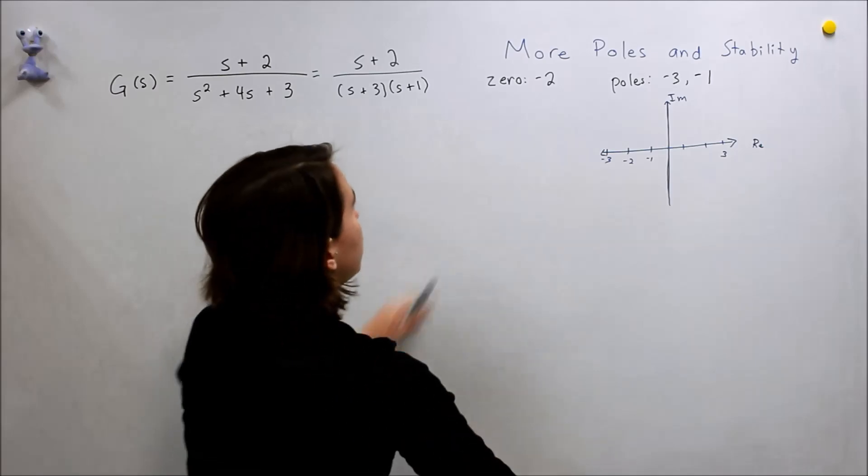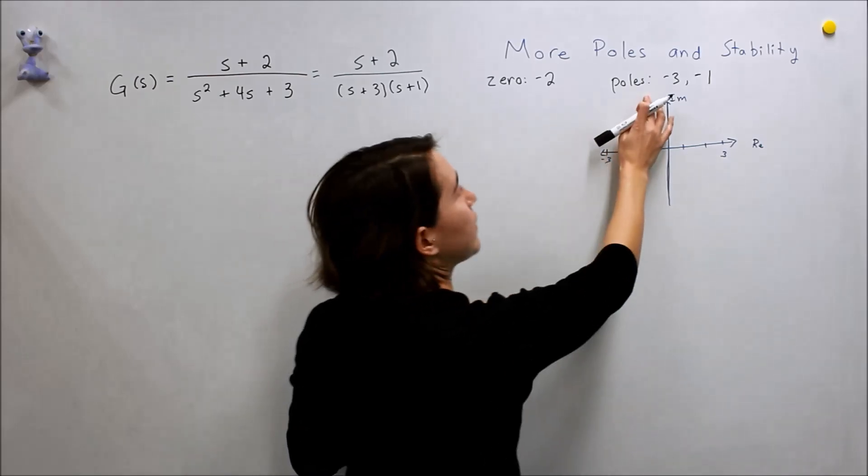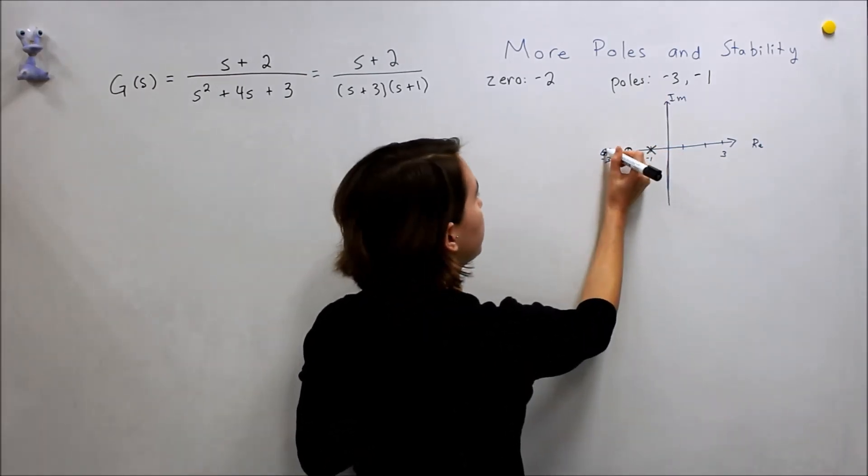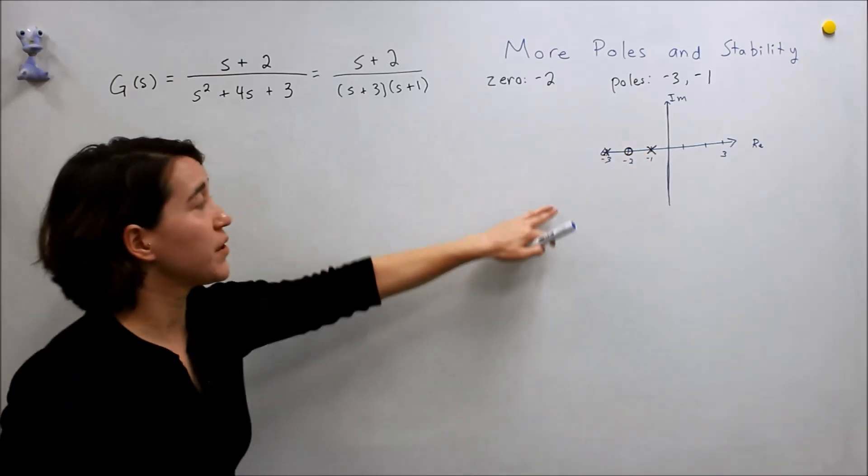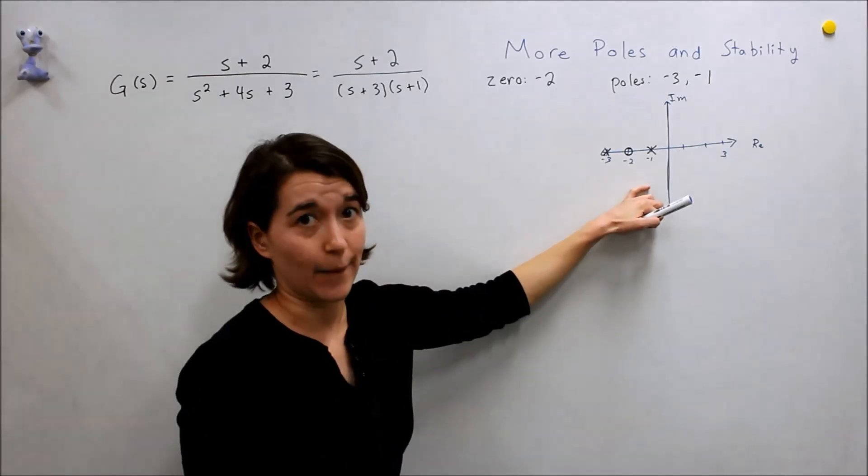Our zero is negative 2, so you can draw a circle at that point, our zero. Then we will plot negative 1 and negative 3. Here you can stop and say, okay, our poles are both negative, and therefore the system is stable.